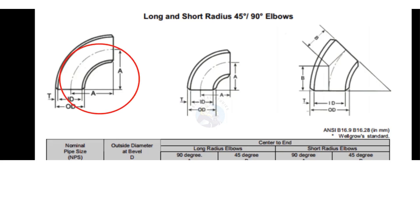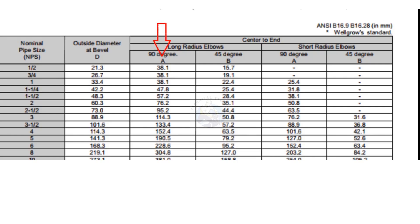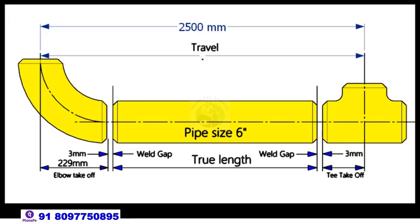According to the chart, the takeoff length is 228.6 millimeters. Let us round it as 229 millimeters. Now we have the dimensional values of the travel, the weld gap, and the elbow takeoff length.